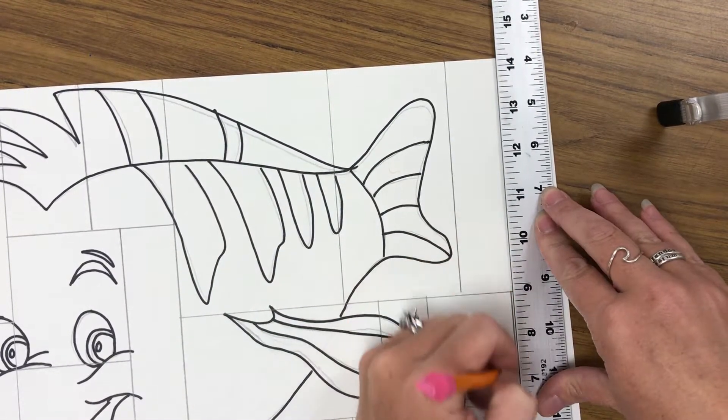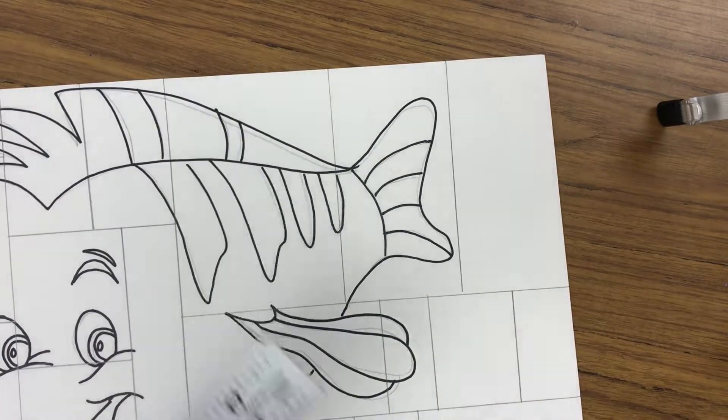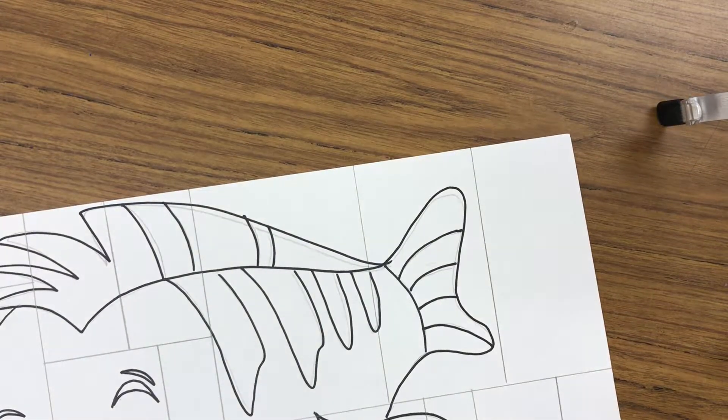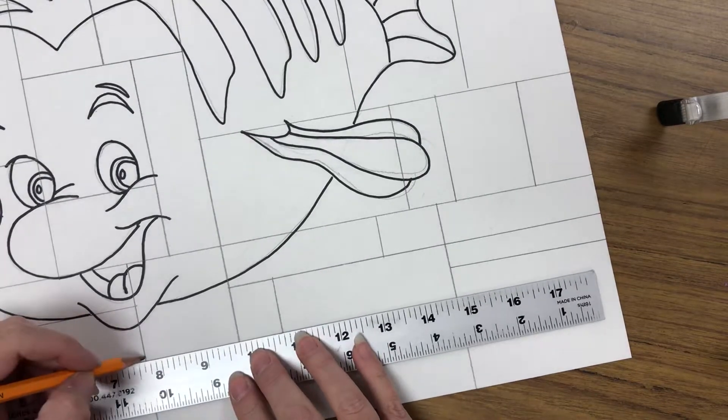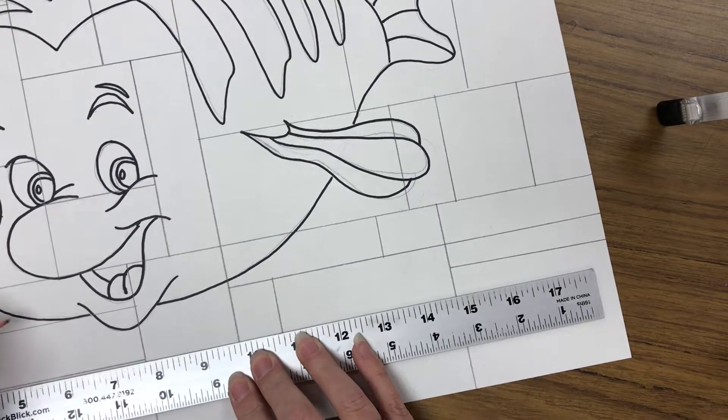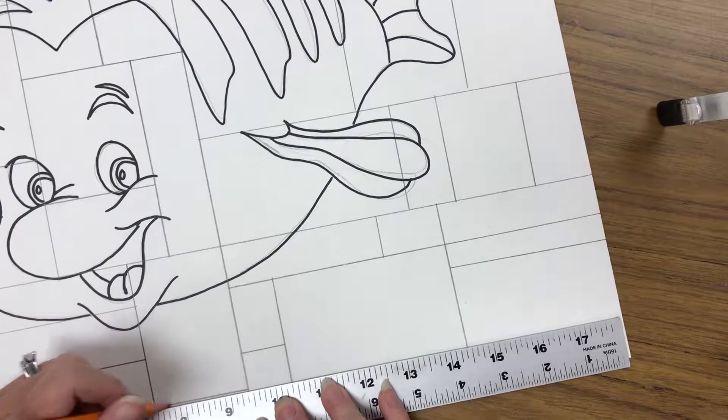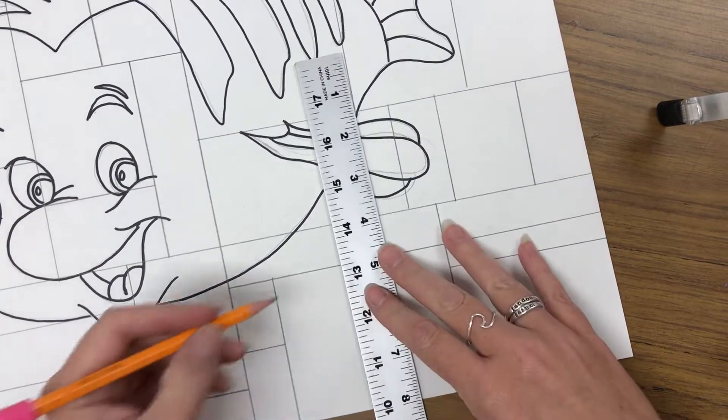Try to keep your lines straight up and down. You're not using a T-square, but make sure you're kind of lining your ruler up with the edge of your paper so that you don't have crooked lines.